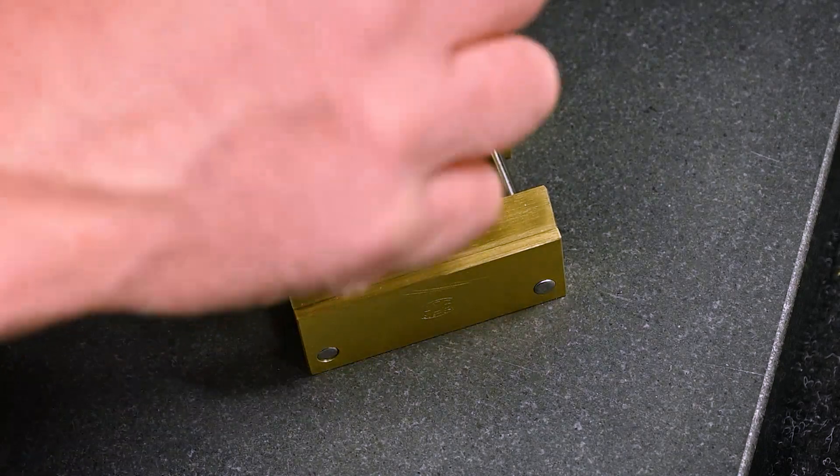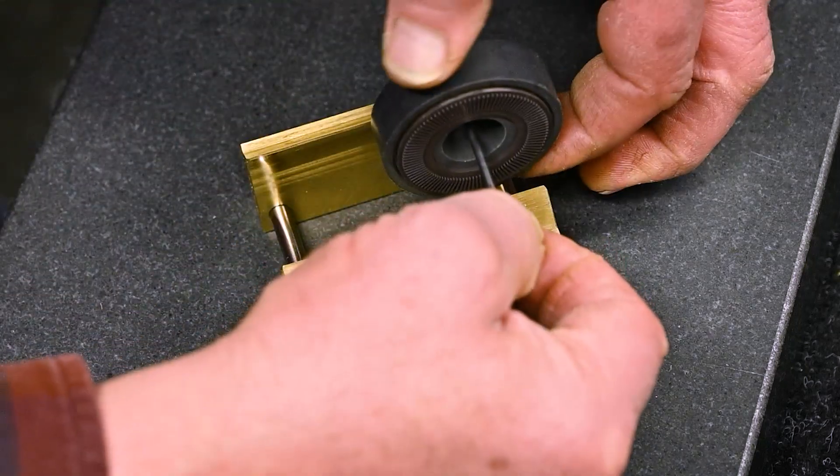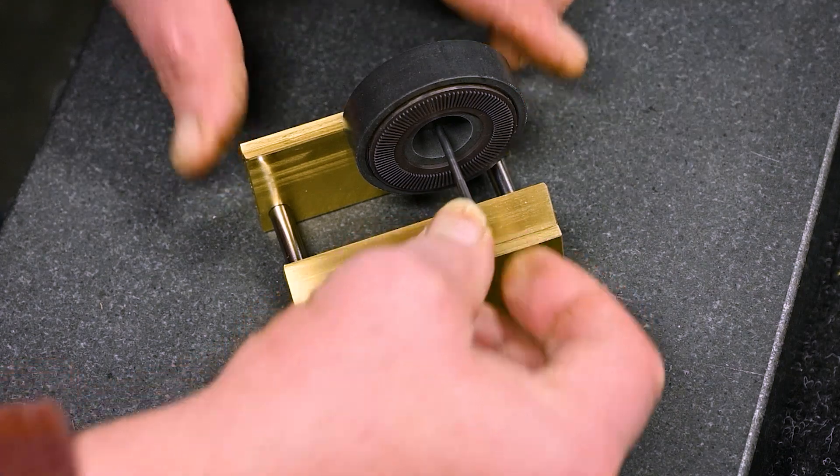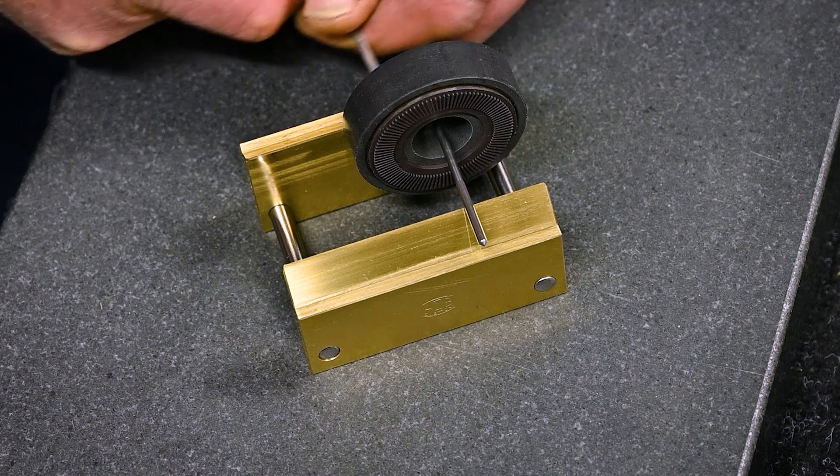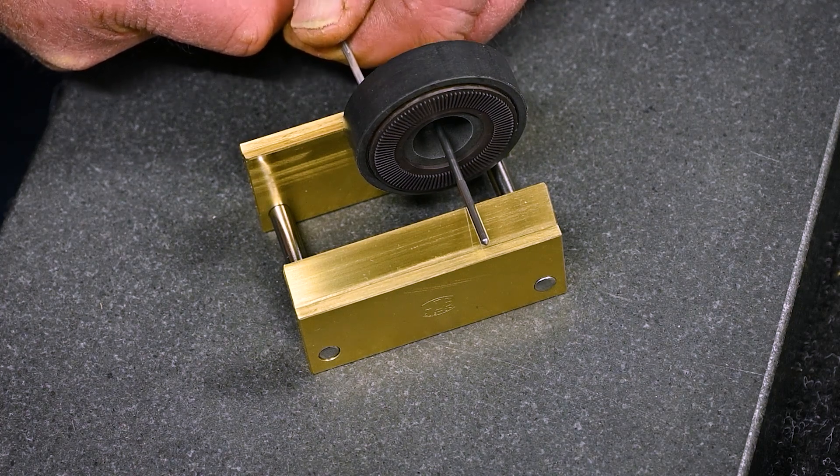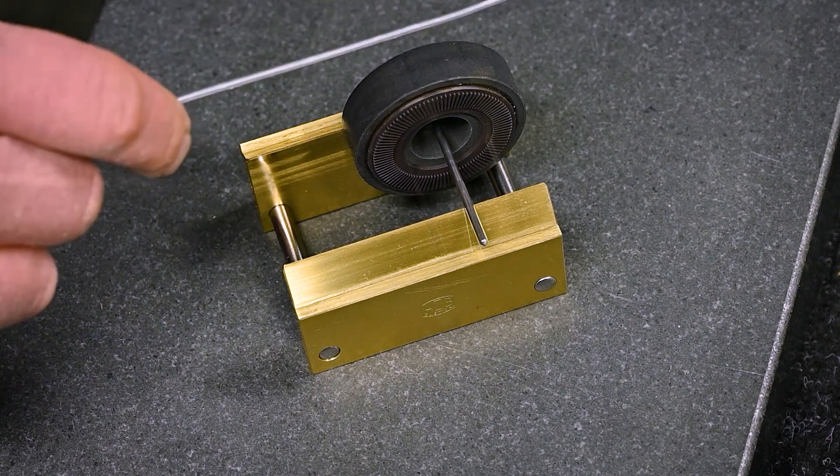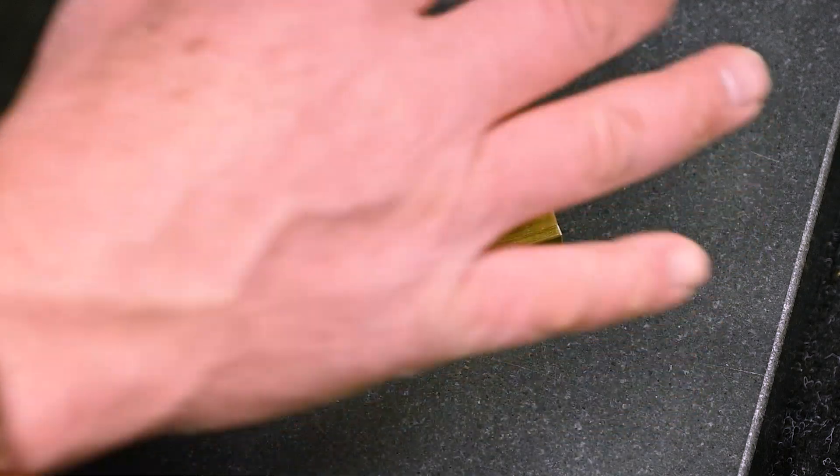This is the capstan pulley, motor pulley, out of a Tascam 122 Mark II. And I thought I would just take the opportunity here to demonstrate one of the reasons why I made this balancing stand. The other one was for small DC motors.